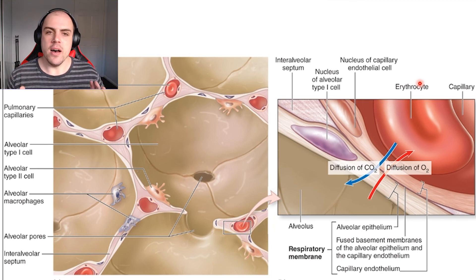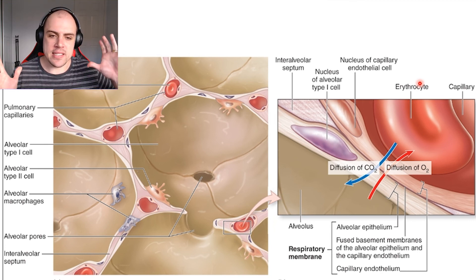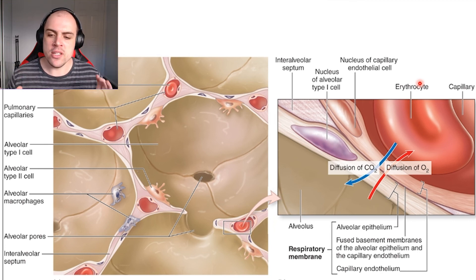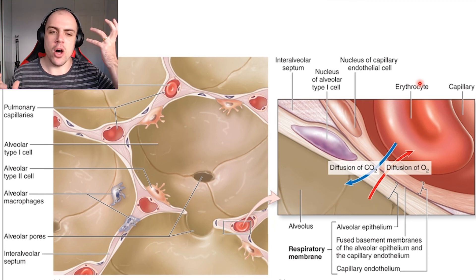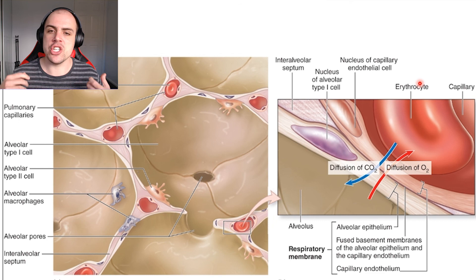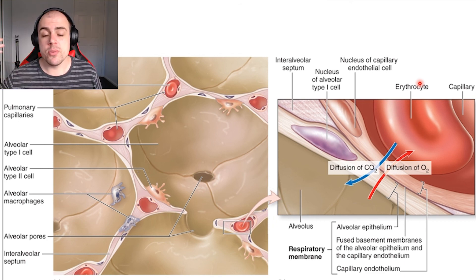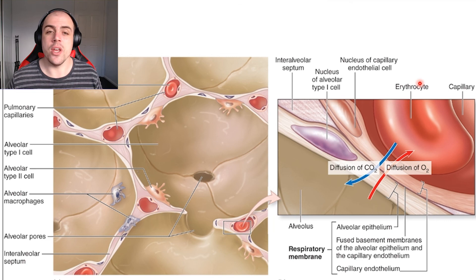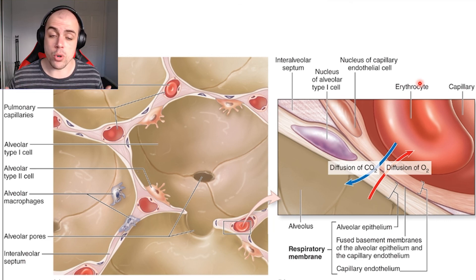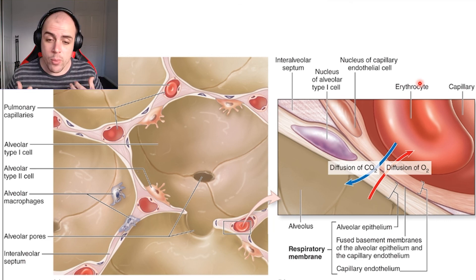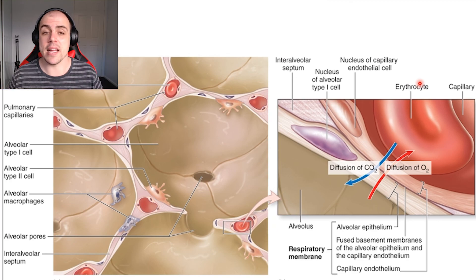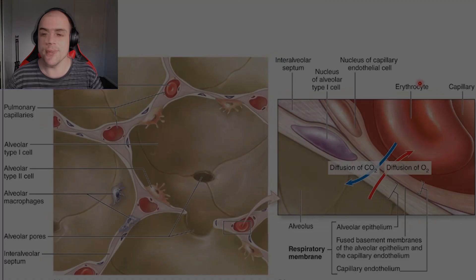Now that we've briefly covered the main structures of the conduction and respiratory system and the movement of oxygen and CO2, what we're going to explore in our next video is the physical process of breathing and how we are able to mechanically achieve this.